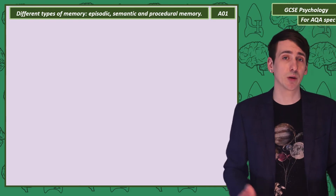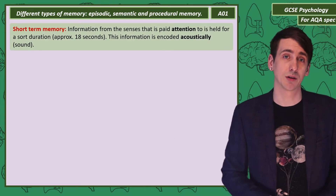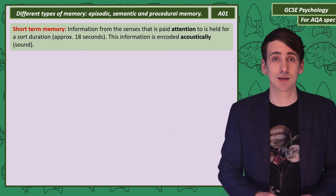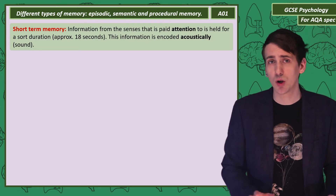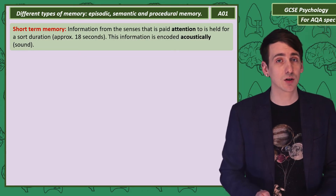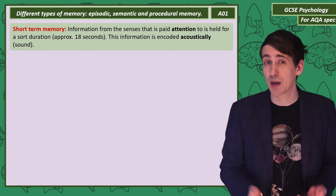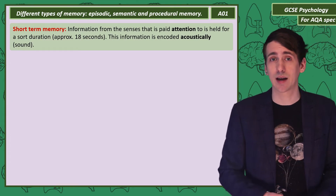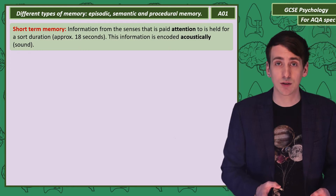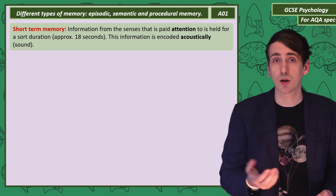Let's make a distinction between two types of memory: short-term memory and long-term. Now lots of information comes into the senses every second, but you don't pay attention to most of it. What you do pay attention to is held in your short-term memory. It doesn't last long — about 18 seconds. And when you're holding it there, like a phone number, chances are your inner voice is repeating it — so acoustic encoding.